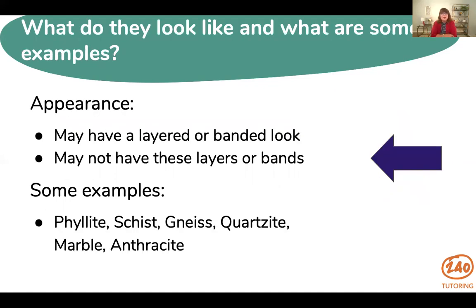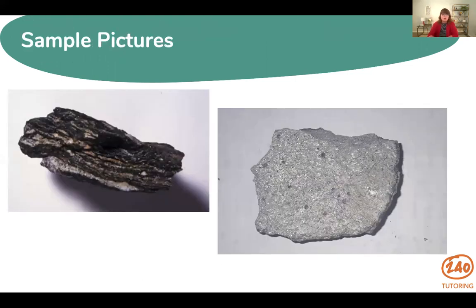Let's talk about appearance. Metamorphic rocks can appear in several different ways. Some will have layers or bands that are visible in the rock, and others will not — it's just not consistent between every type. Some examples are schist, gneiss, quartzite, and marble. Here are a couple of pictures: this one is gneiss, formed very deep beneath the earth's surface, and over here you have quartzite. In the gneiss, you can see the bands; in the quartzite, you cannot. So the appearance can vary.